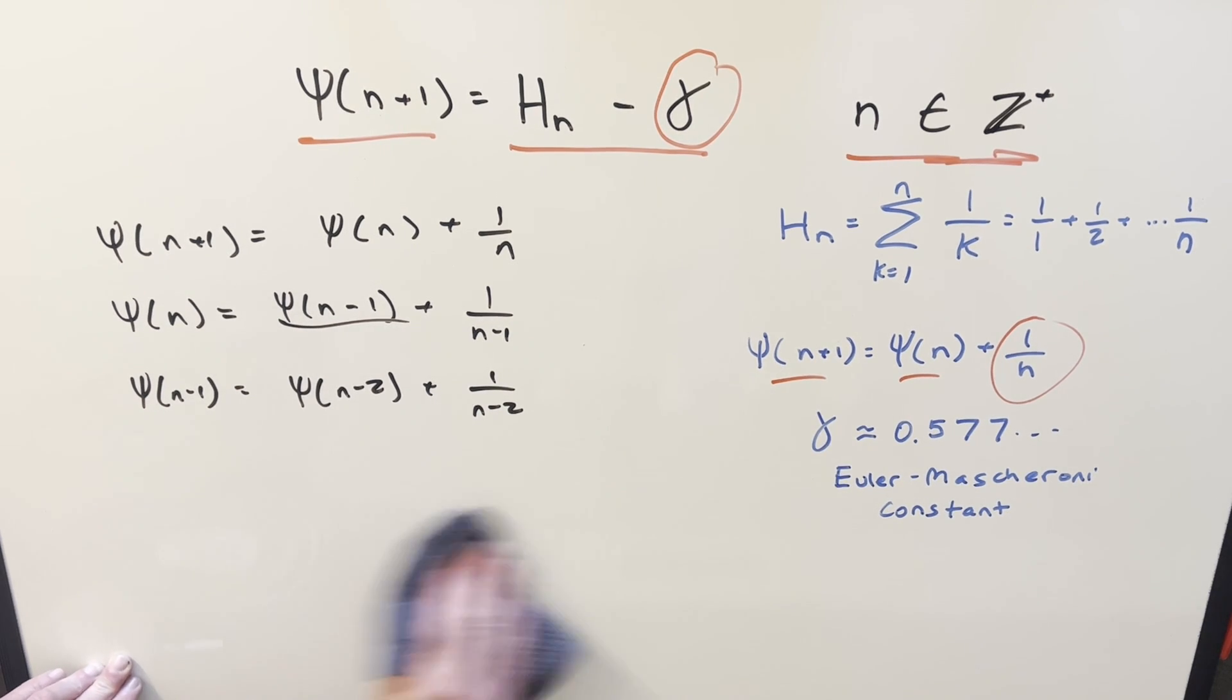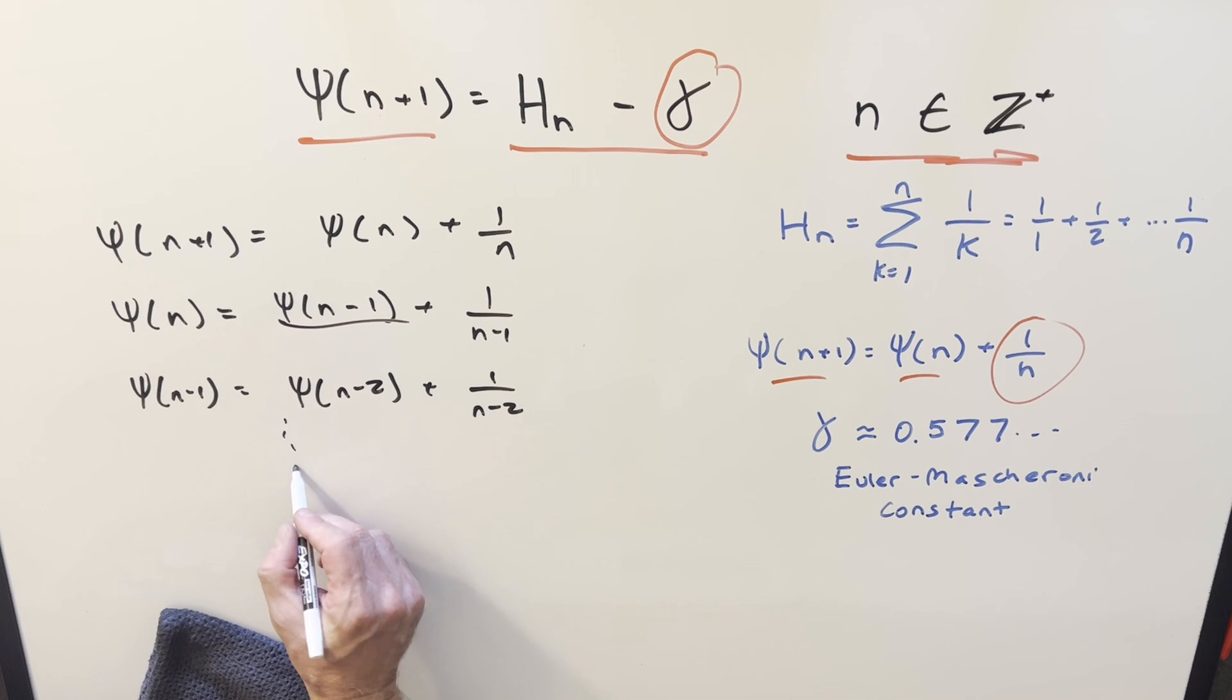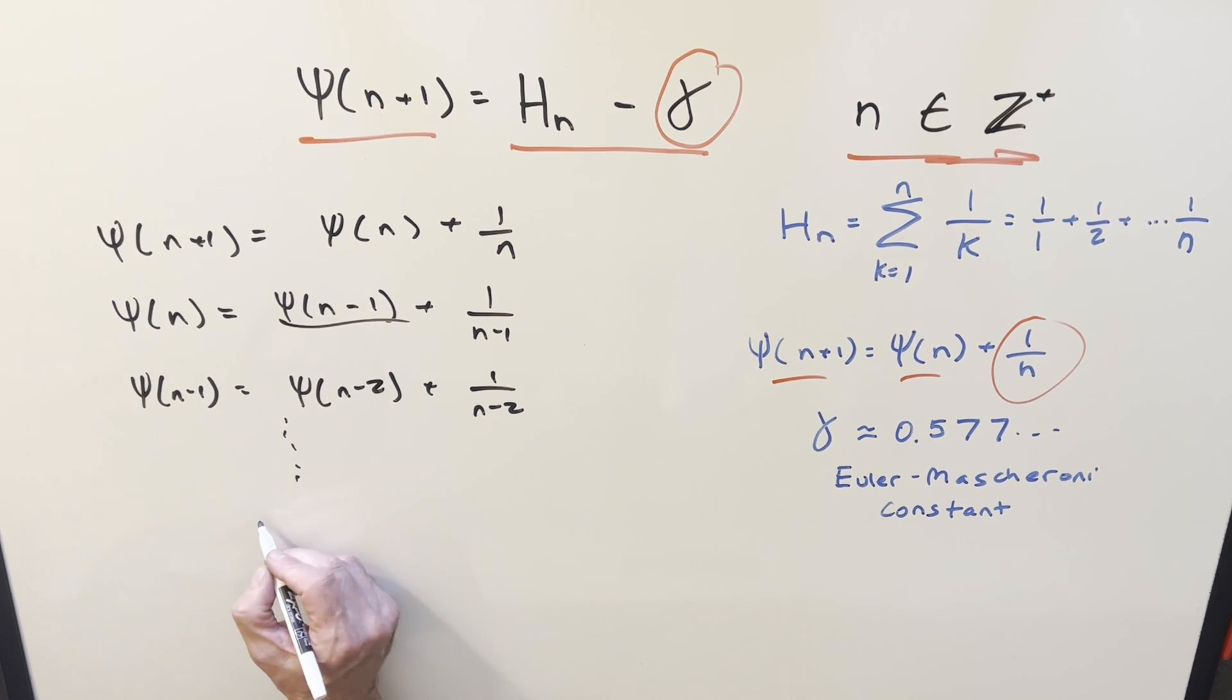But then this is just going to keep, we're just going to keep going on and on like this forever. We don't know how long we're going because we don't know exactly what n is. But eventually what's going to happen is you're going to hit kind of the wall because eventually you're going to get to digamma of 1.